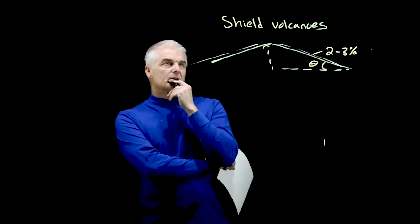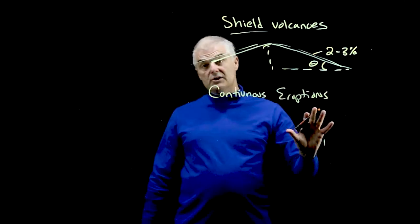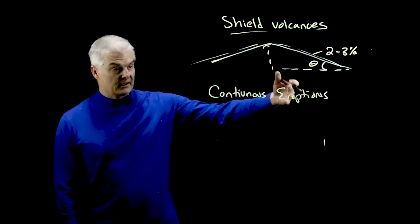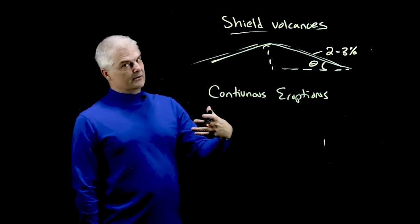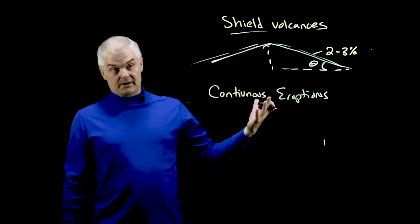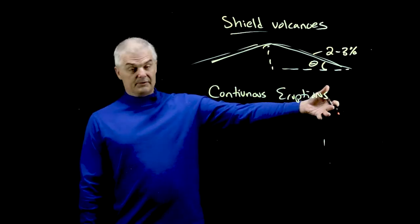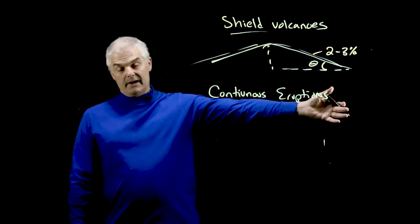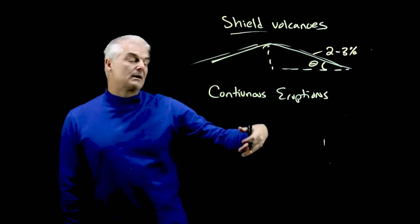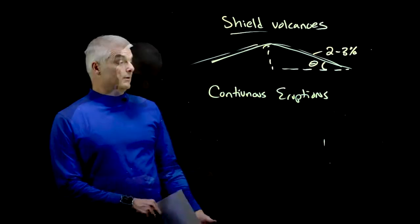Now one thing about shield volcanoes that happen is they almost have continuous eruptions. They're constantly erupting. There's not like a gap. You'll find with a composite volcano there's gaps. You wait and all of a sudden boom it goes. But in a shield volcano they're continuously erupting. The classic one that everyone talks about is the one on Hawaii, the big island of Hawaii. It's continuously erupting over and over again and the lava flows keep growing and growing.